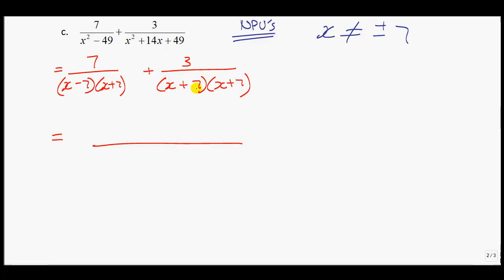Now let's simplify this. I'll get myself a common denominator. Noticing that each one has an x plus 7, so I'll put in an x plus 7. The one on the left side has an x minus 7, and the one on the right side has another x plus 7. That would be my common denominator. The 7 needs to be multiplied by what it's missing, one of those x plus 7s. And the 3 is missing one of the x minus 7s.